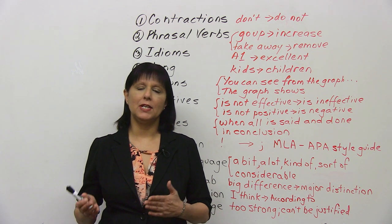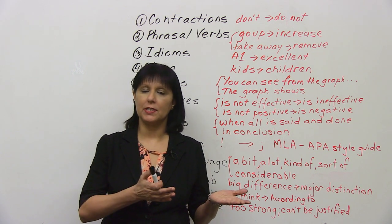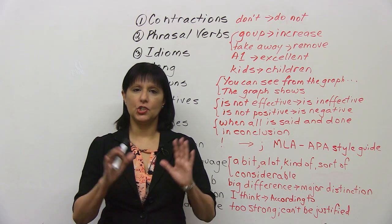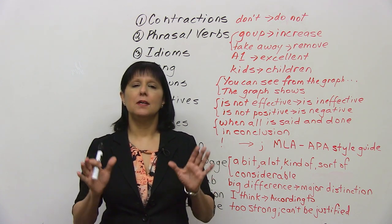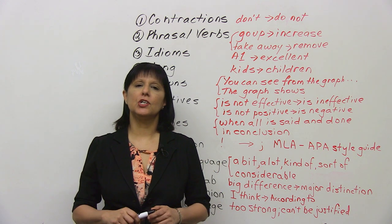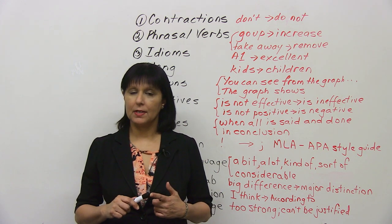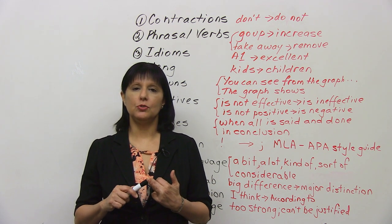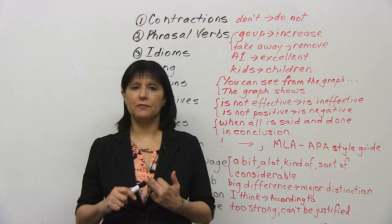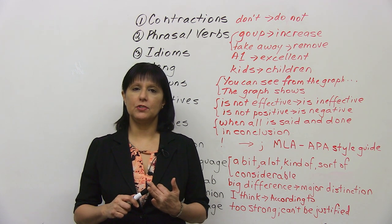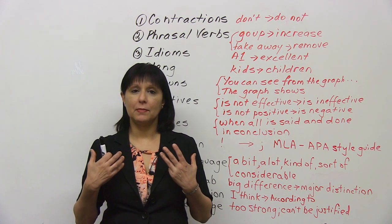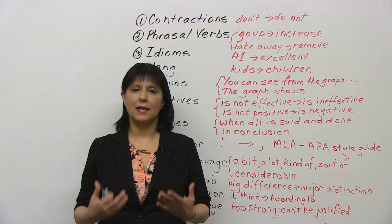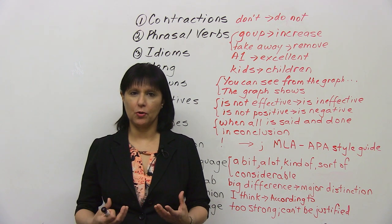What's the difference between academic English and general English? Well, in general, academic English is more formal, it's more objective, and it requires a lot of referencing. You always have to let people know where you got your information from — you have to cite the source, you have to give the source.